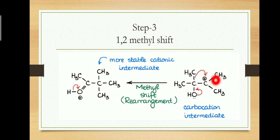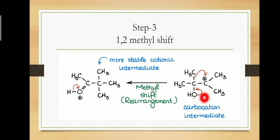The next step is the 1,2 methyl shift. At the end of step 2 we have a carbocation, which is comparatively less stable than the oxonium ion. The oxonium ion is more stable because oxygen has a lone pair of electrons and can participate in resonance. Any structure with more resonance forms is more stable, so the oxonium ion has two canonical resonance forms, making it more stable than the carbocation. This difference in stability drives the rearrangement.